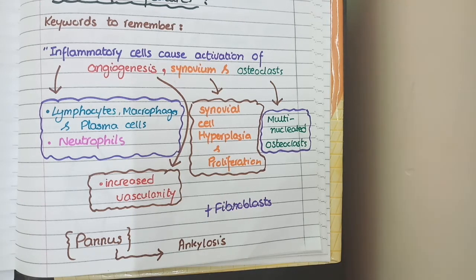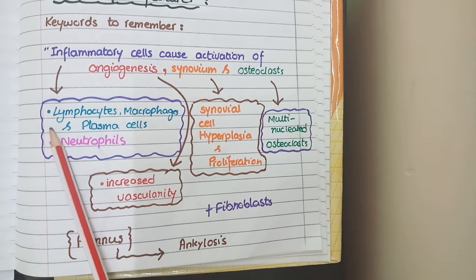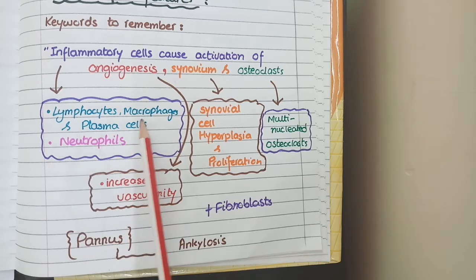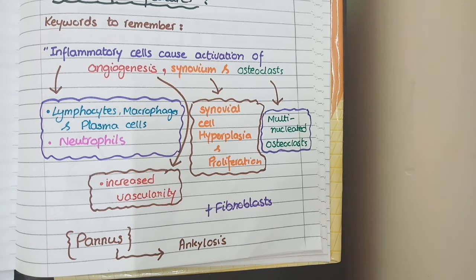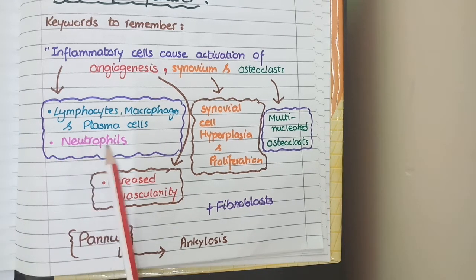The first keyword is inflammatory cells. So you will see chronic inflammatory cells — that are lymphocytes, macrophages and plasma cells — and these lymphocytes can also form lymphoid follicles. In addition to the chronic inflammatory cells, you can also find acute inflammatory cells that are neutrophils.